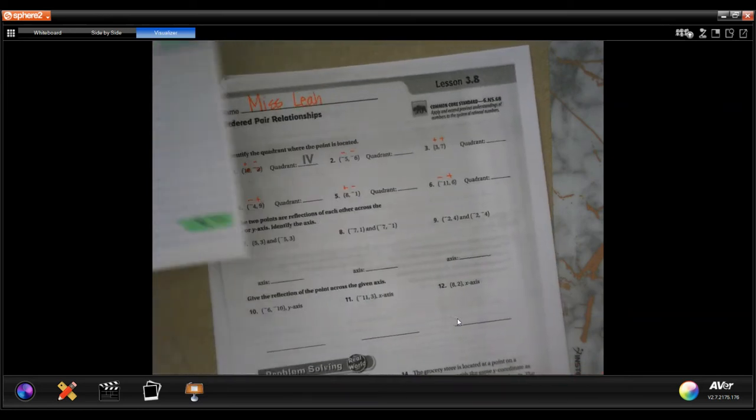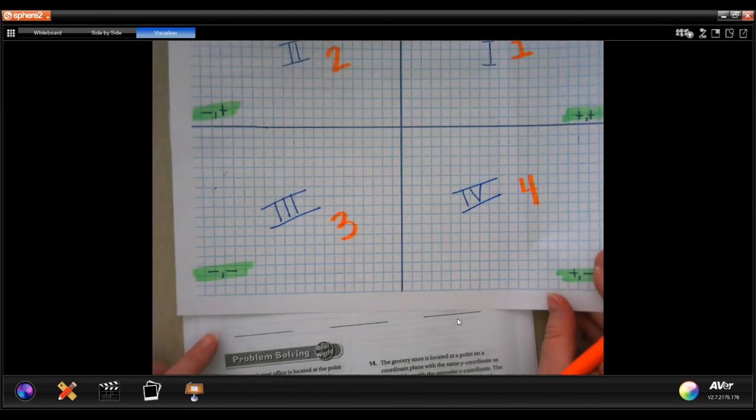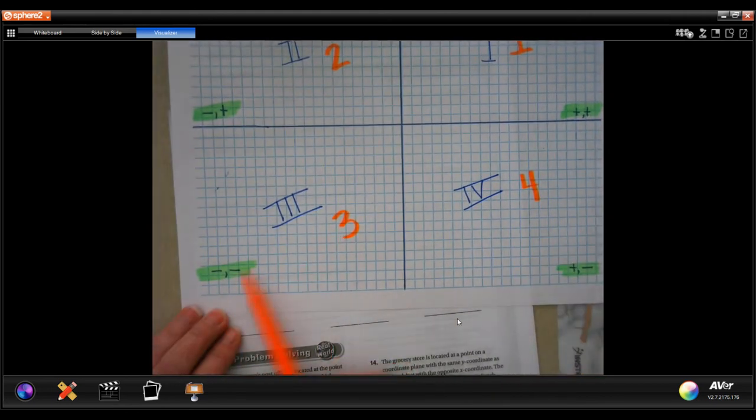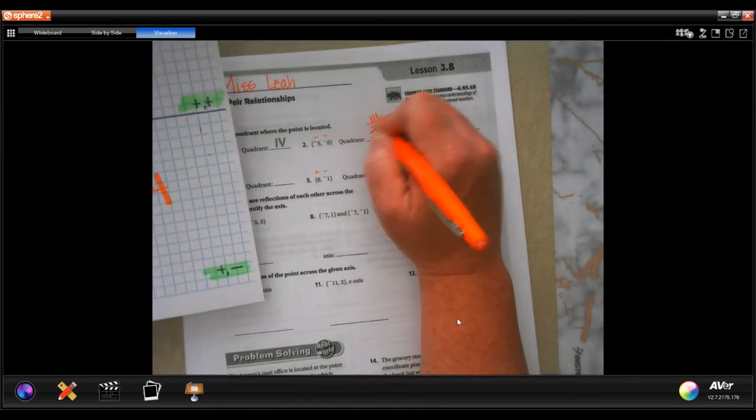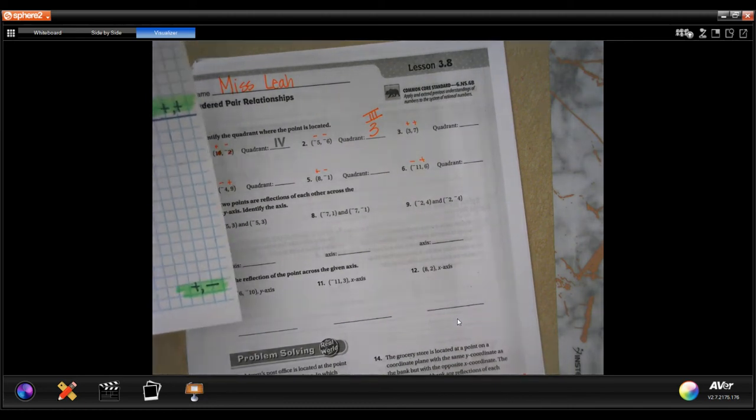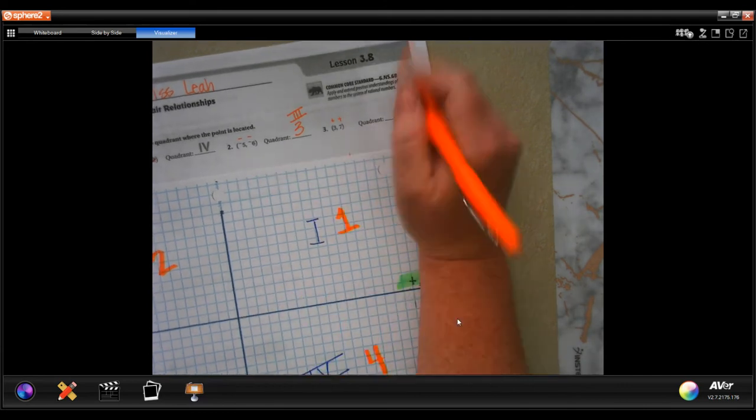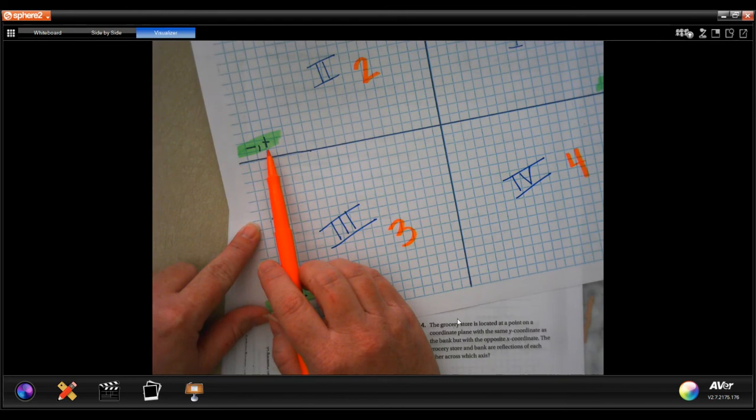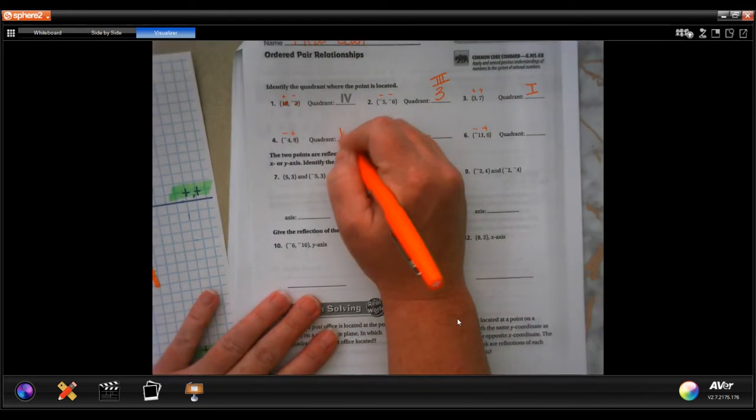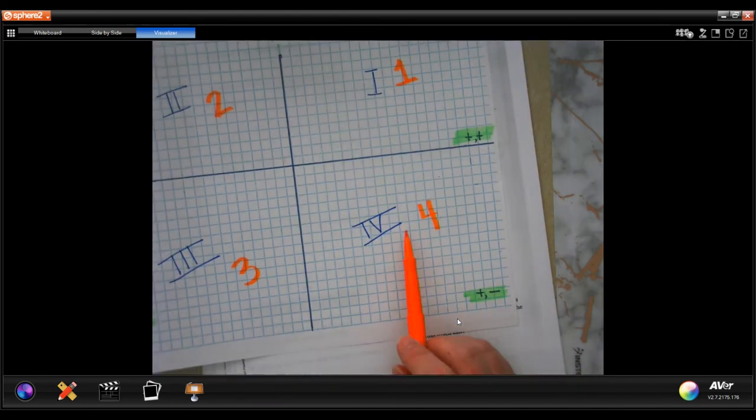We're going to look at number two. It says minus minus. Well, minus minus is quadrant three, or actually it wants you to do the roman numeral. All right, so plus plus, well that's quadrant one. Minus plus, quadrant two. Plus minus, quadrant four.